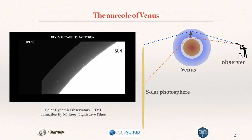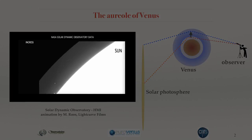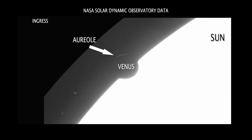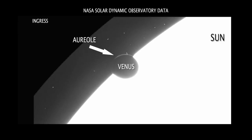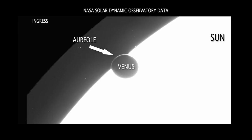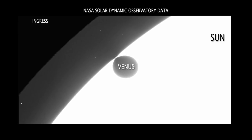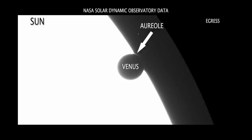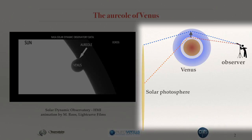They provide useful information on the upper atmosphere of Venus because, as you may know already, when Venus enters or exits the transit, a faint ring of light appears, starting from the polar regions and due to light refracted by the upper atmosphere of Venus reaching the observer. By exploiting this spectacular sight, we can try to investigate the physical properties of the atmosphere at the level where refraction occurs.